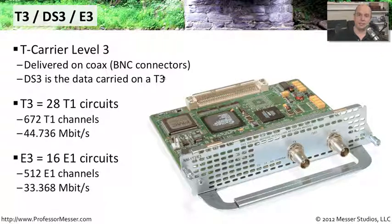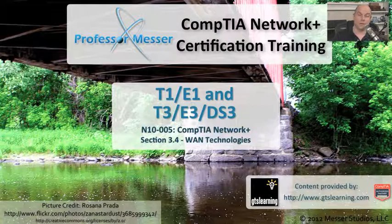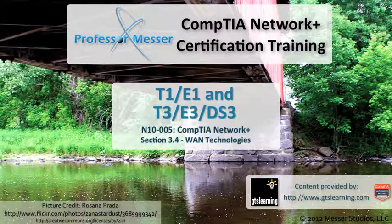An E3 connection is a similar scenario. We have 16 E1 circuits coming through for 512 E1 channels, coming to about 33.368 megabits per second. We typically put in a T3 or E3 connection into a major data center to increase total throughput or bring in multiple T1 lines over a single circuit.